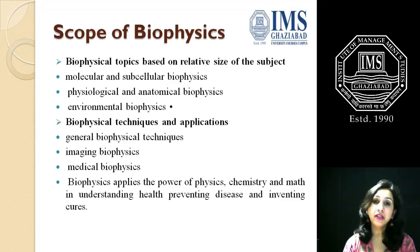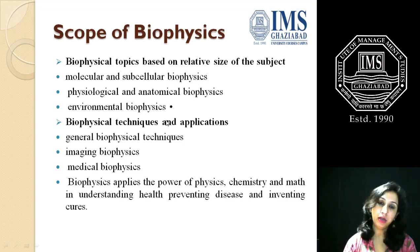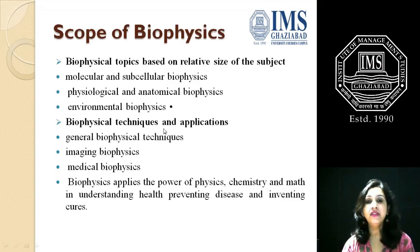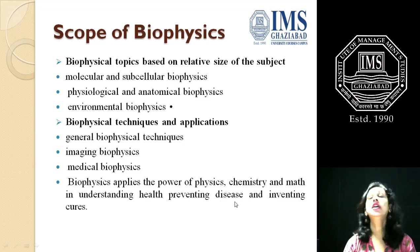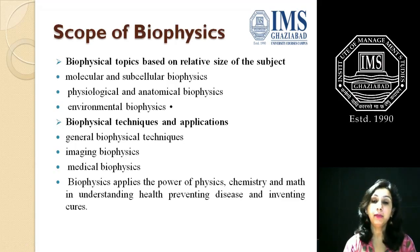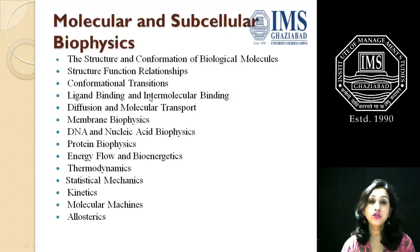Biophysics topics are organized based on the relative size of the object: molecular and subcellular biophysics, physiological and anatomical biophysics, and environmental biophysics. The main branches include general biophysical techniques, imaging biophysics, and medical biophysics. Biophysics applies the power of physics, chemistry, and math to understanding health, preventing disease, and inventing cures. Certain important diseases can be cured with the help of biophysics.